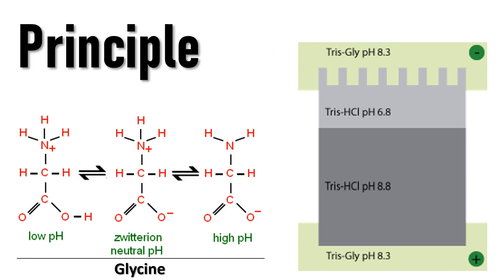Glycine can exist in three different charge states — positive, neutral, or negative — depending upon the pH. At low pH, glycine has an overall positive charge, whereas at high pH it has an overall negative charge. At neutral pH, it exists in the zwitterion form, wherein it will have a neutral charge.